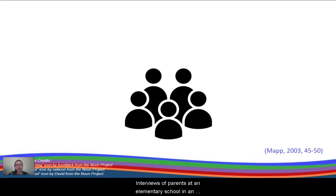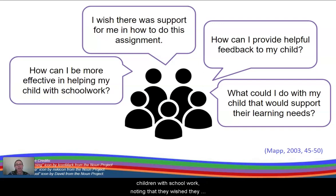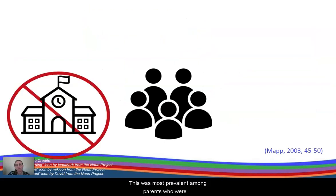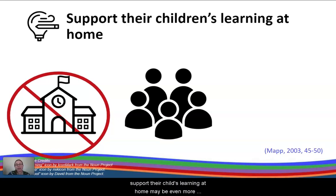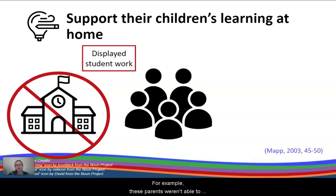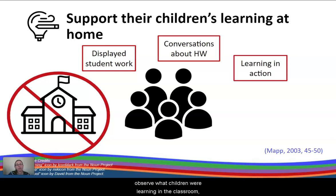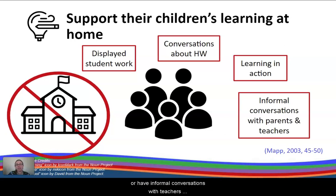Interviews with parents at an elementary school in an urban, low socioeconomic setting that boasted over 90 percent parental participation revealed a similar theme. Many of the parents expressed a desire to be more effective in helping their children with schoolwork, noting that they wished they had more support in how to do the assignments, how to provide helpful feedback, or how to support their child's unique learning needs. Intentional ongoing communication about how to support their child's learning at home may be even more important for families who have less exposure to cues and information that would increase their capacity to help with learning activities at home — for example, seeing completed work on the walls, overhearing conversations about homework, observing classroom learning, or having informal conversations with teachers and other parents.